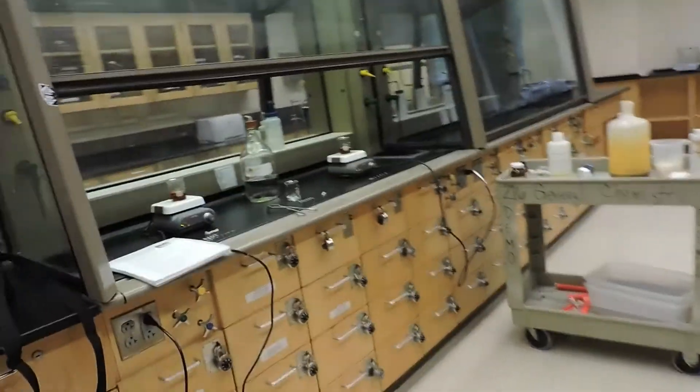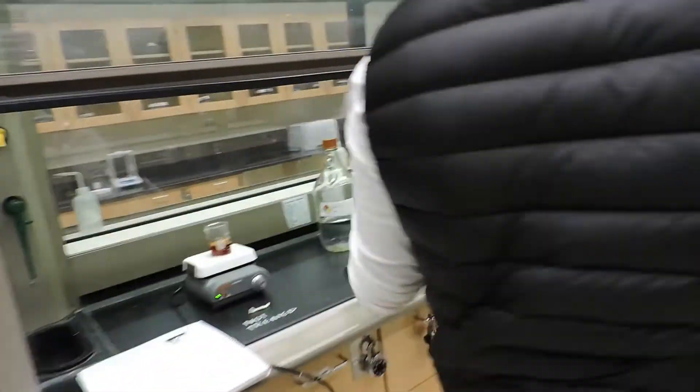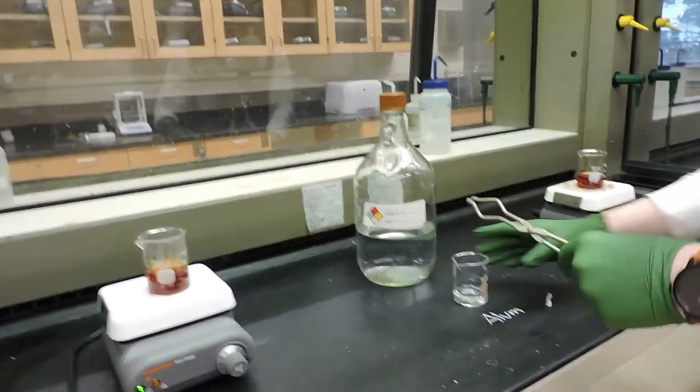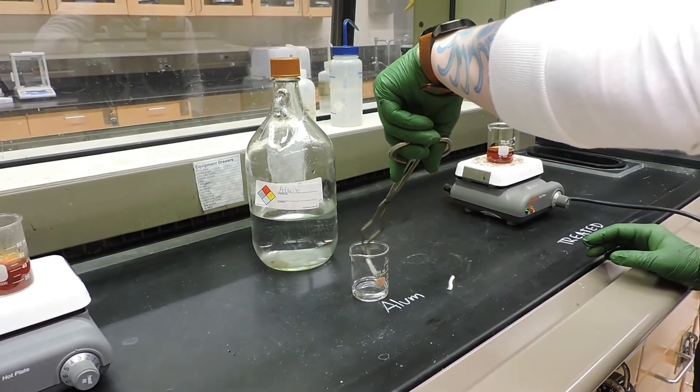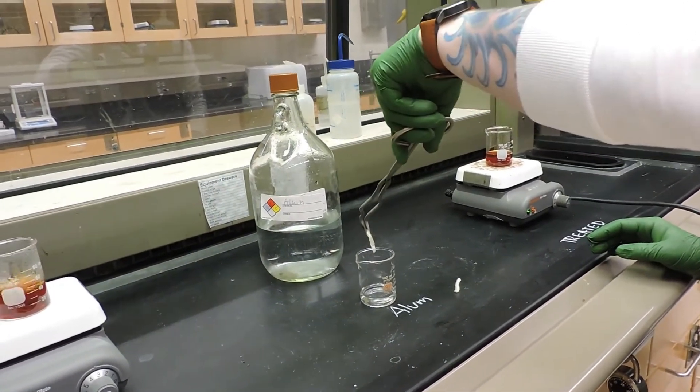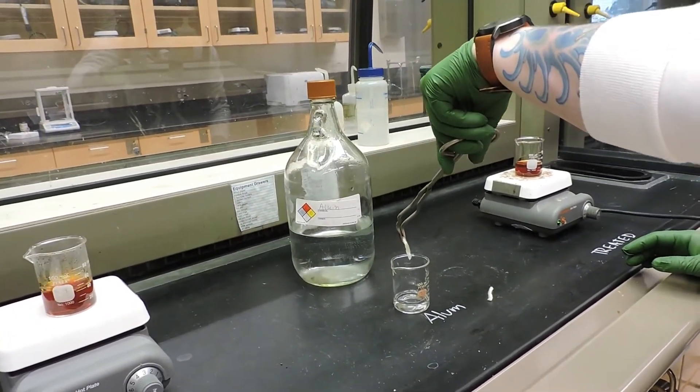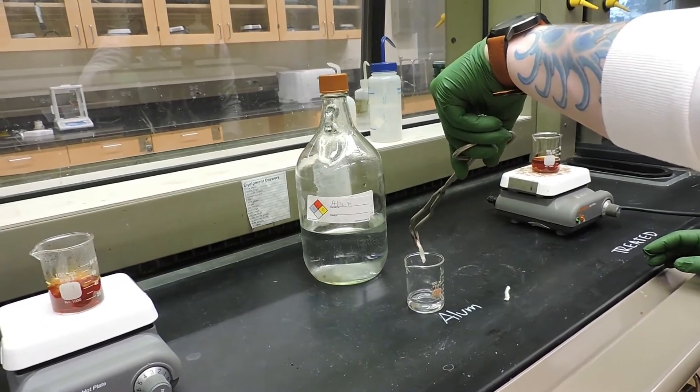All right, now we have the piece of wool in the alum bath that has been sitting for a couple minutes. So we will remove that, rinse it with water, and then we will immerse it for two minutes in the hot solution.